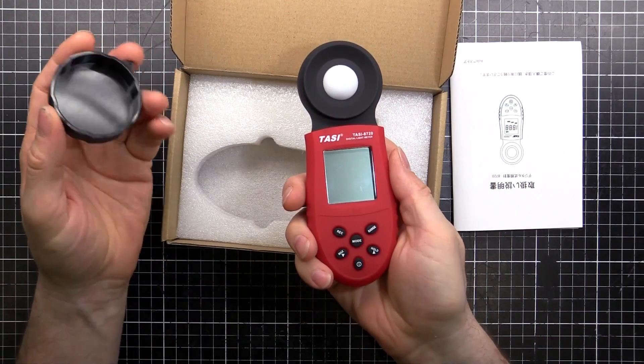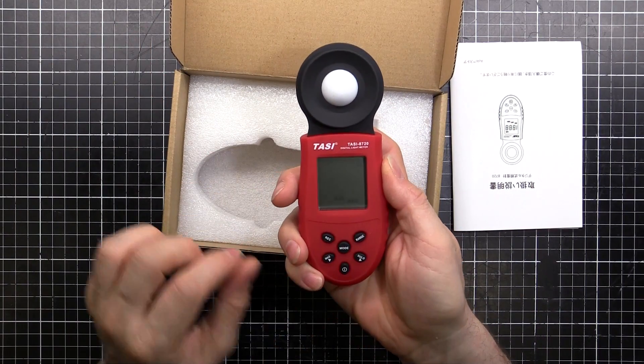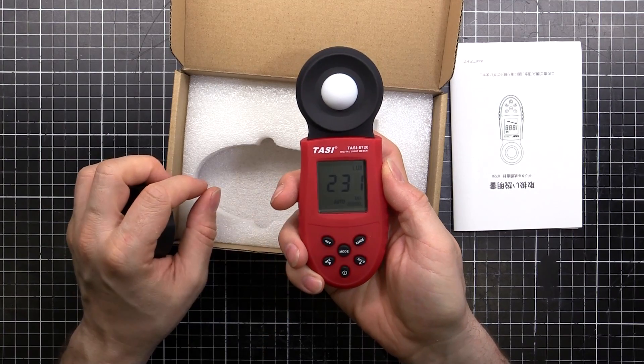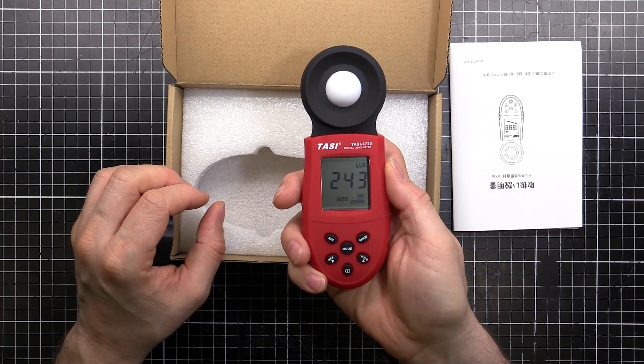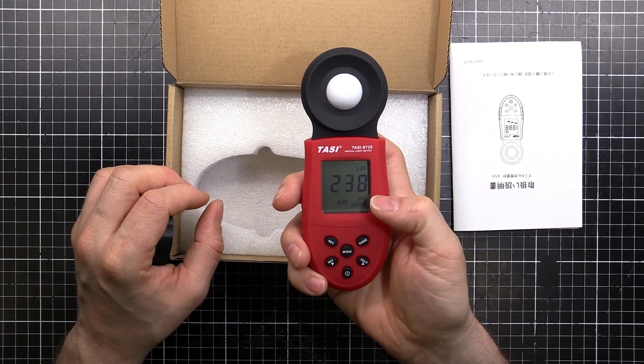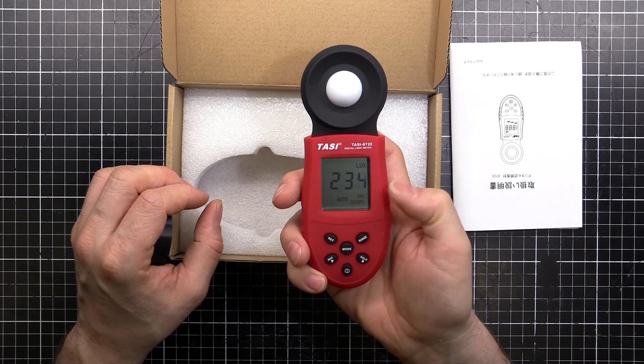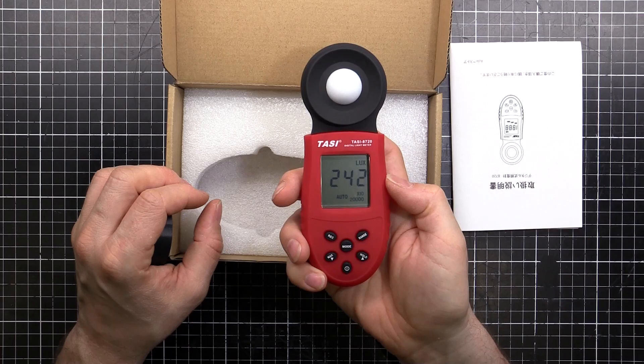Take the cap off, and we can turn it on and start reading what the brightness is. So right now it's 240, but that's times 10. So it's 2,300 lux right here.